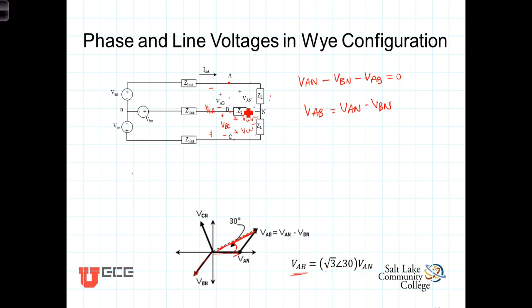You might think that it ought to be twice as big, not square root of three times as big, but because they're out of phase with each other, and again, I'm going to leave the trig to you to prove to yourselves, it's not equal to twice VAN, it's equal to the square root of three times VAN.